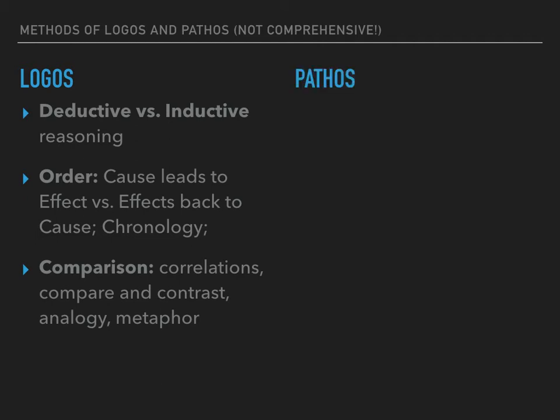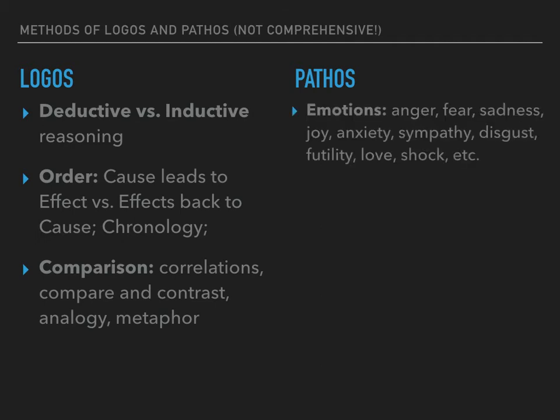The flip side of this is pathos — it's about how audiences react to evidence or logic. The first and most obvious form of pathos is when an author tries to elicit an emotion. Are they trying to make you feel anger or fear, sadness, love, sympathy, disgust, shock, or futility? But pathos might not just be about creating or eliciting those emotions. Sometimes it's about managing those emotions — how does an author try to minimize or maximize the emotions felt by the reader?